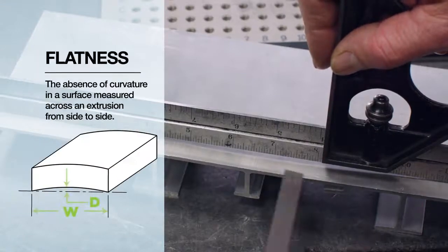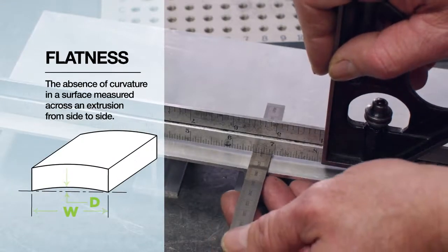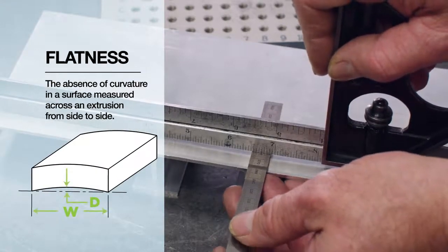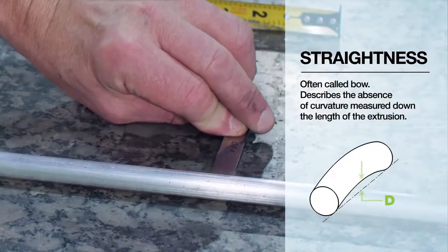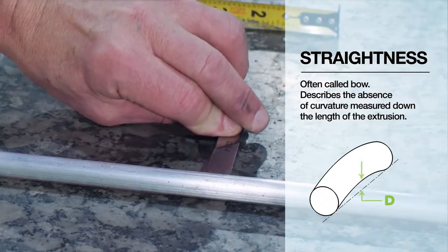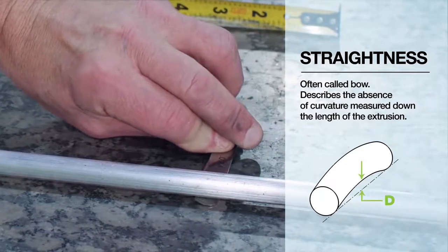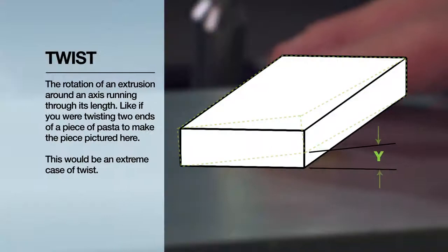Flatness describes the absence of curvature in a surface measured across an extrusion from side to side. Straightness, often called bow, describes the absence of curvature measured down the length of the extrusion.